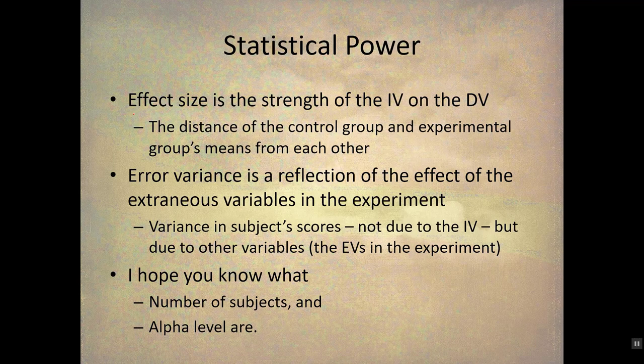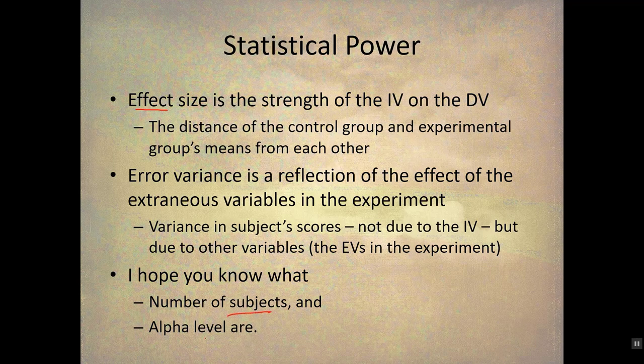Effect size is the strength of the IV on the DV — it's the distance between the control group and the experimental group's means. That's one of the things that goes into calculating statistical power. Error variance is a reflection of the effect of the extraneous variables in the experiment — it's the variance in subject scores not due to the independent variable, but to all the other variables, such as extraneous variables.